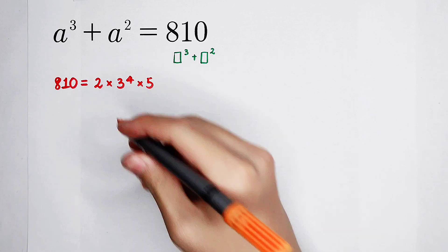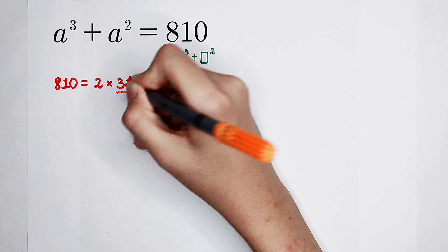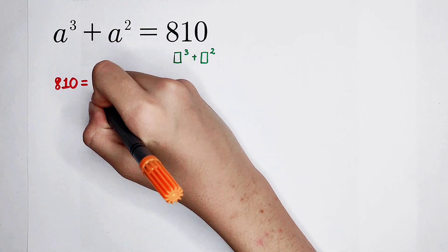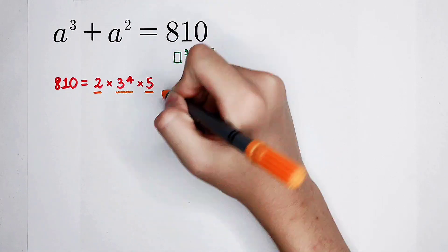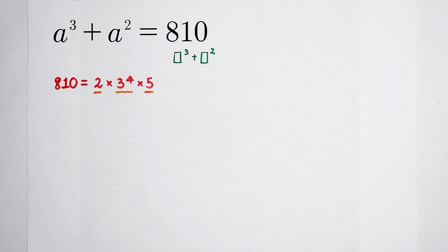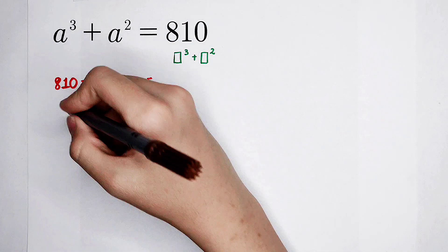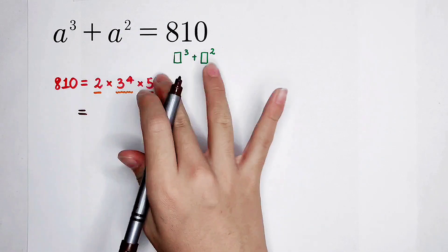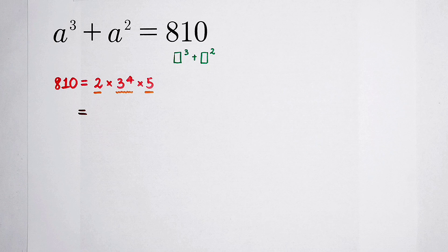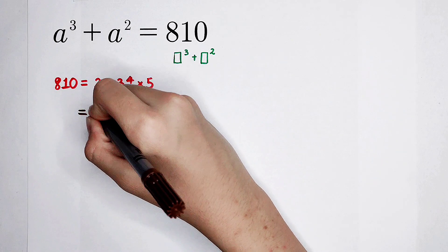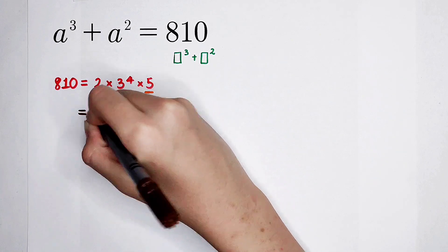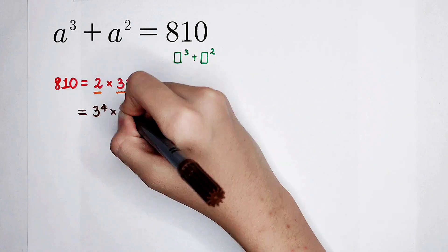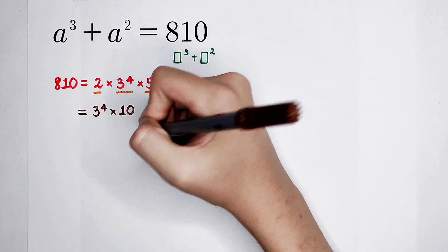I think this 3 to the power of 4 is like a ghost. This 2 and this 5 is not very large, so I'm going to multiply them together. 2 times 5 is 10. So we have 3 to the power of 4 times 10.